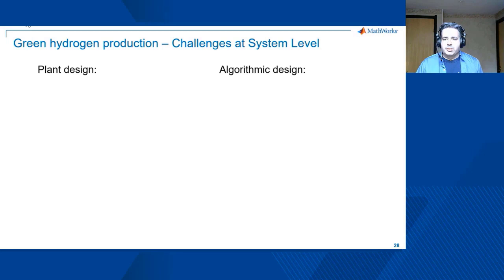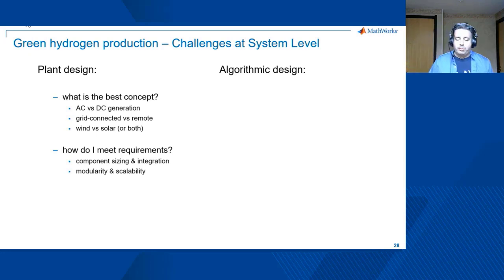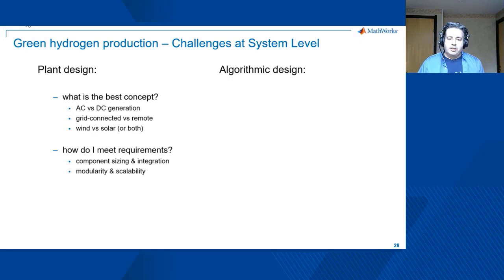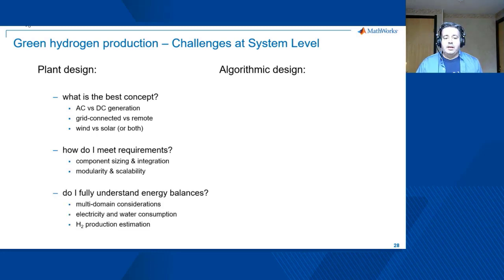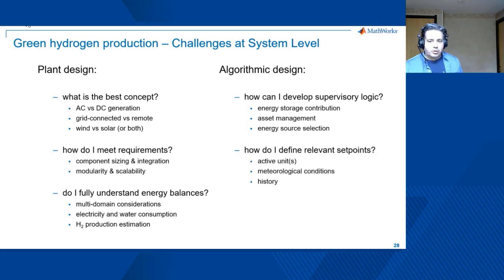At the system level, challenges fall into two categories: plant and algorithmic design. For the plant, the first question is what is the best concept to produce green hydrogen — AC versus DC generation, grid-connected versus remote, wind versus solar or a combination. How can requirements for different components be met in terms of size, integration, cost, and scalability? Do you really understand the energy balances in your system? From an algorithmic point of view, how can you architect the supervisory logic to account for energy storage contribution, asset management, and selection of the right sources? How can you set up relevant set points across very different circumstances, including historical and meteorological conditions?